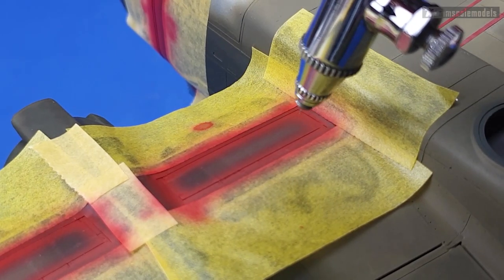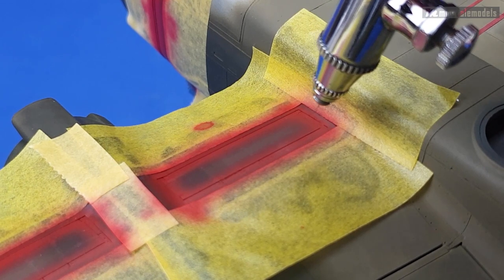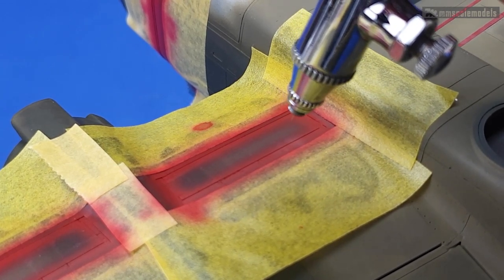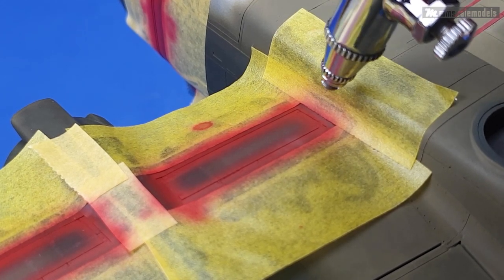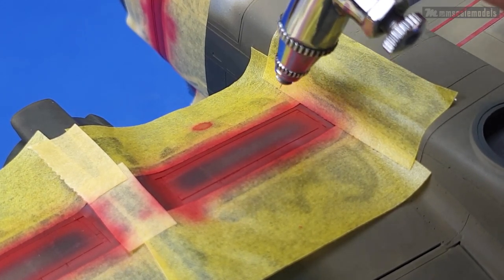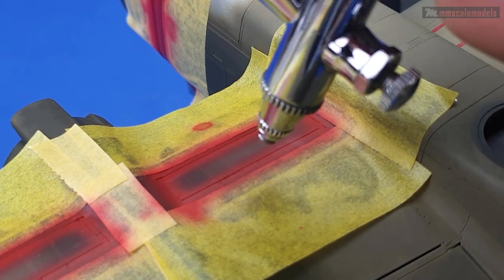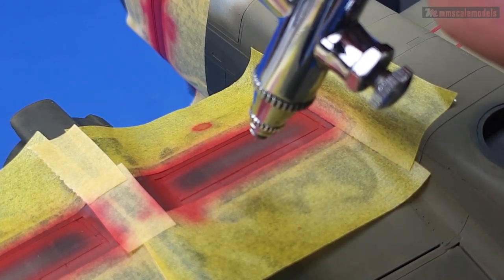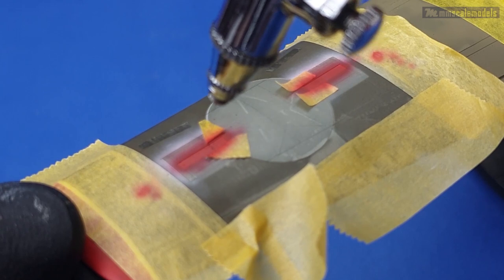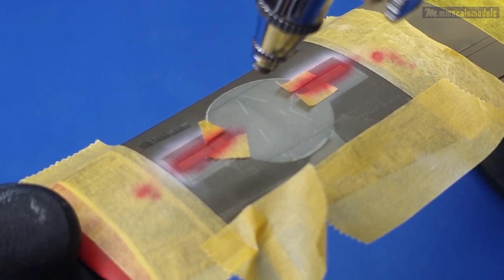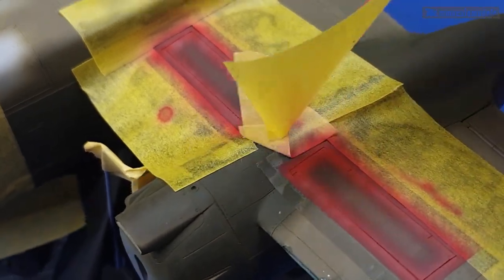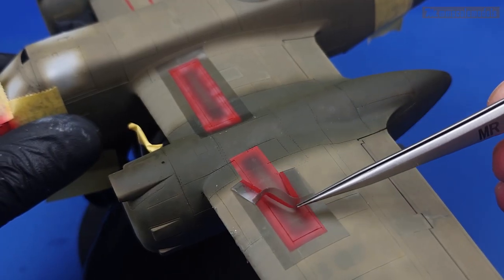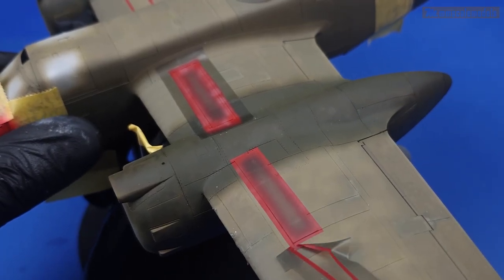Hold on, hold on. We cannot leave this color without some weathering. And I think it will be a good thing to apply some fading with very highly diluted buff paint with some MRP rapid thinner. Okay, the painting of the walkways is complete. And now we can enjoy the removal of the masking.